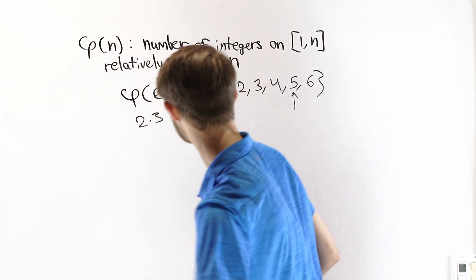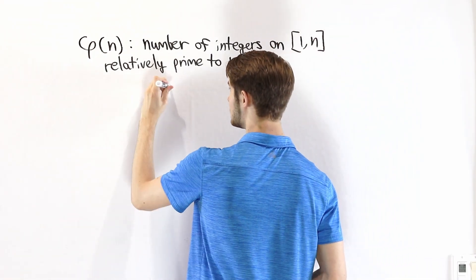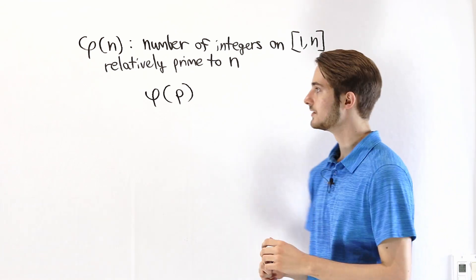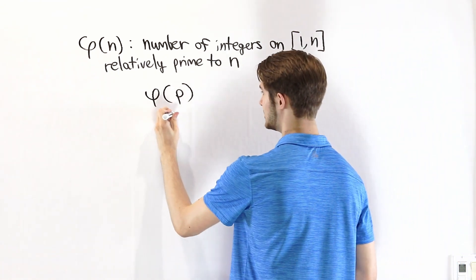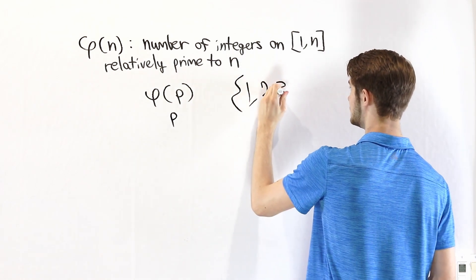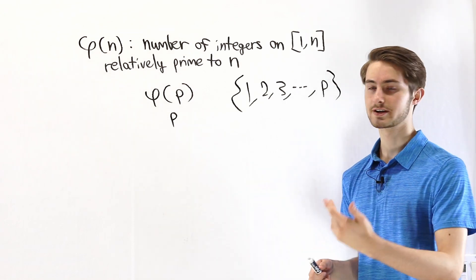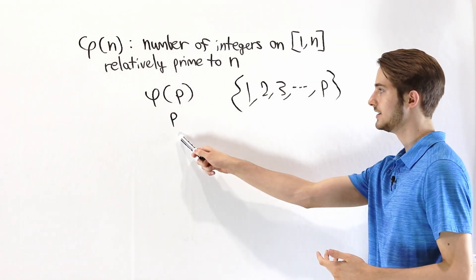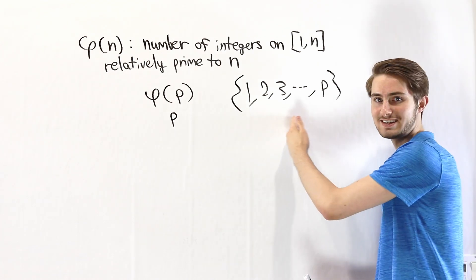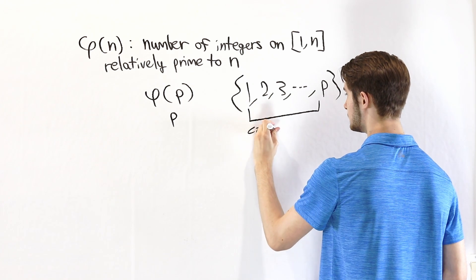Now we're going to look at some specific examples of the totient function for prime numbers. What is the totient function of a prime number P? Remember that the prime factorization of a prime number is just P itself — it is its own only prime factor. As a result, if we look at the interval 1, 2, 3, and so on up to P, none of these numbers are going to share any factors in common with P, because in order to share a factor with P they would have to include P in their prime factorization. But it's impossible to include P in your prime factorization and still be less than P — you'd have to be at least equal to P.